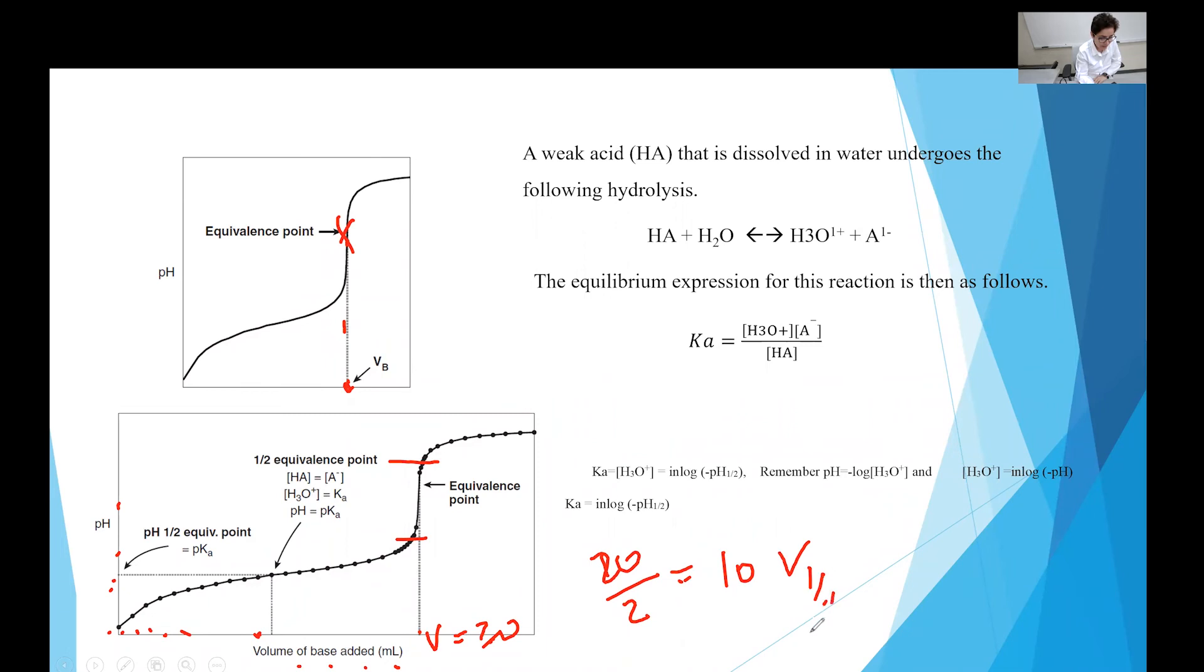Then you divide that 20 by 2. That is 10. This is known as V one-half, which is the half volume. At the V one-half, using again the graph, you find corresponding pH. So this is the V one-half. That's the cross point of the curve. So after you plot your graph, then from the cross point of the curve, you go to the pH line and find the corresponding pH.